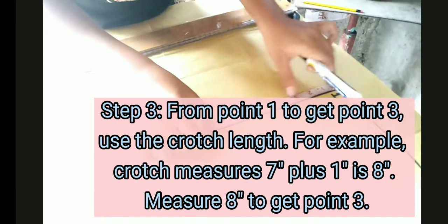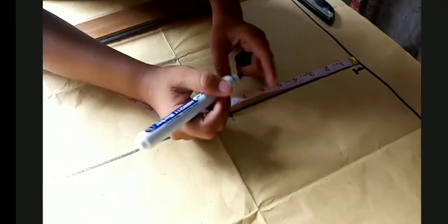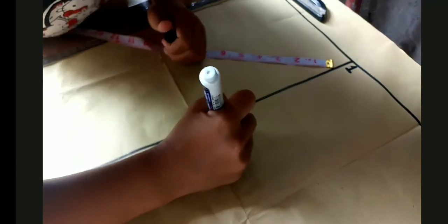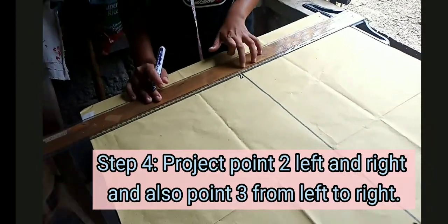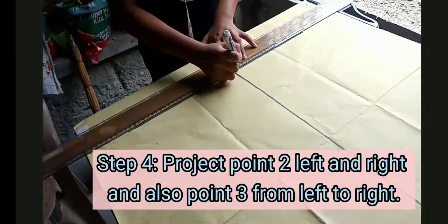From point 1 to get point 3, use the crotch length. The crotch measure 7 plus 1 is 8. Project point 2 left and right and also point 3 from left to right.